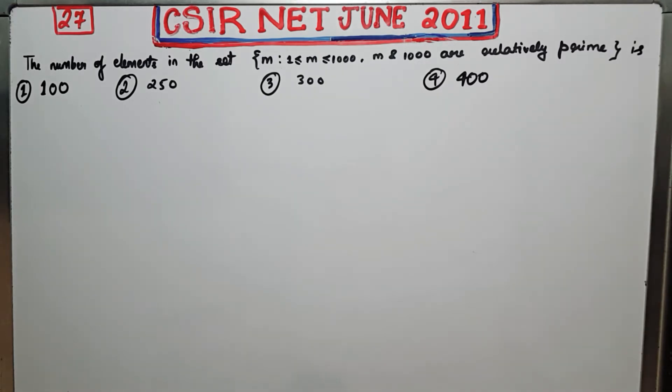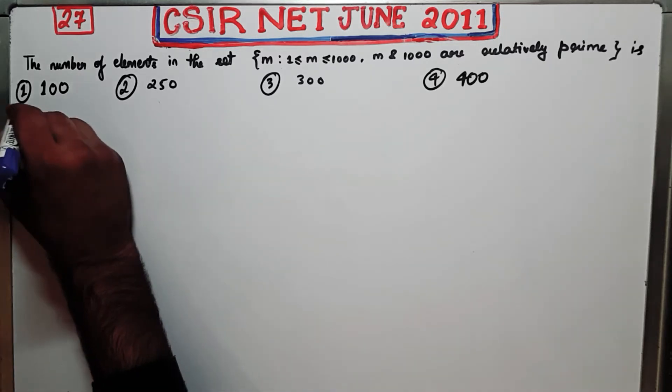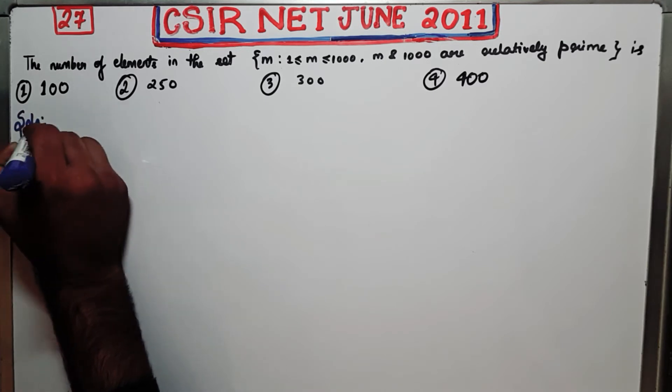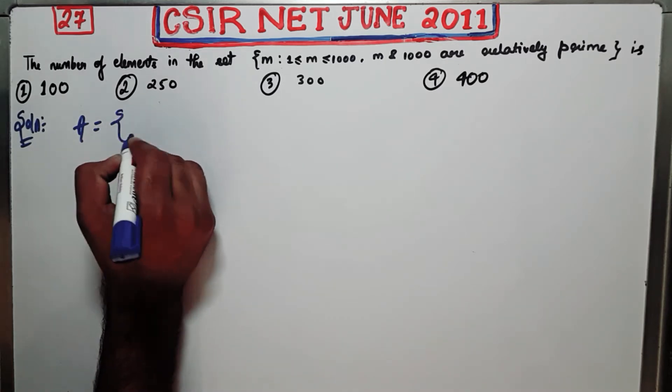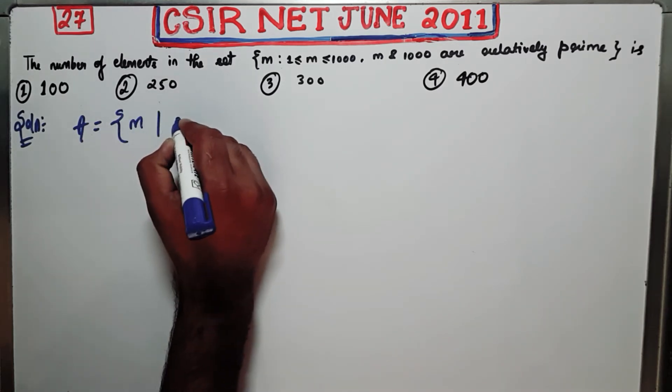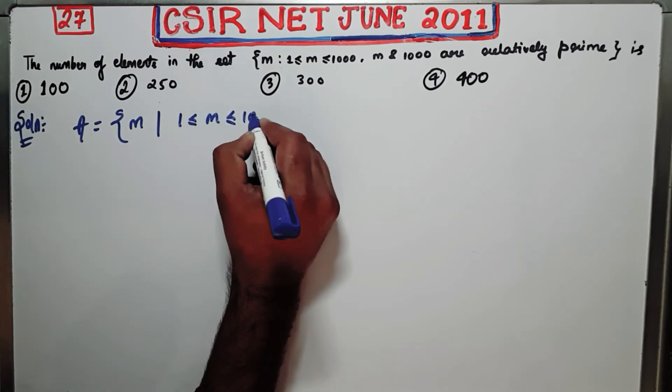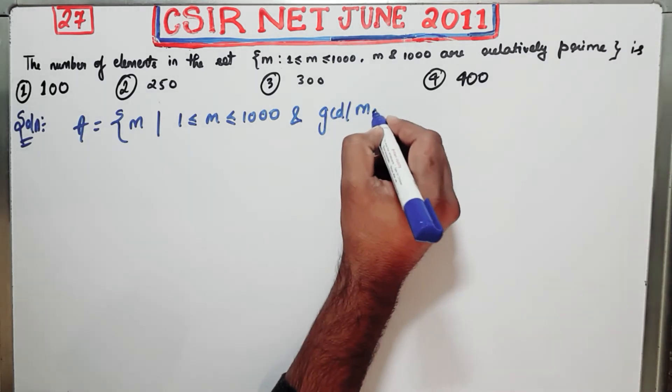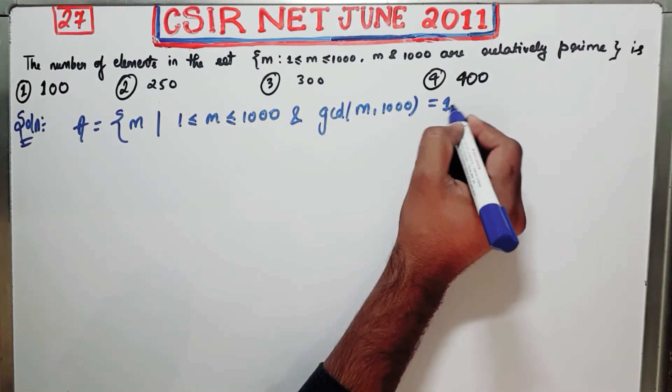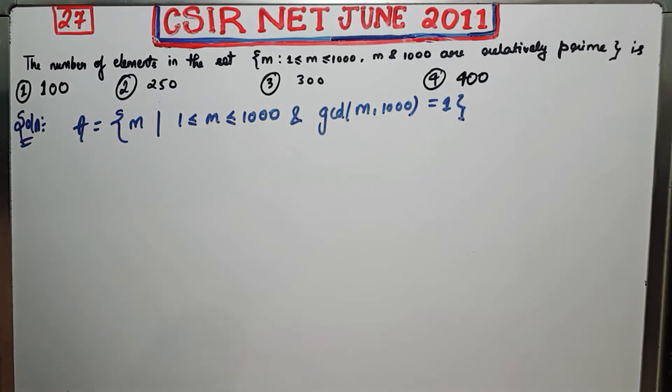You have to calculate this. This question is actually from the topic abstract algebra. So if you have done a course in abstract algebra you can easily figure out how to solve this question. Firstly see what is given to you. You have a set, let us name it as A, which consists of all those members which lie between 1 and 1000 and GCD of M and 1000 must be 1. This is what is given to you.